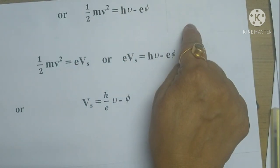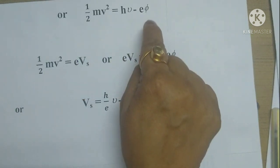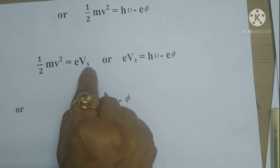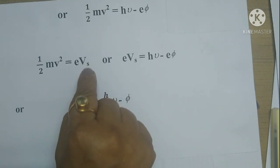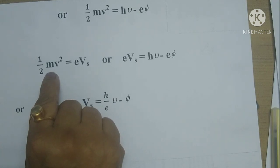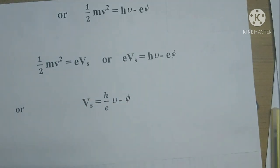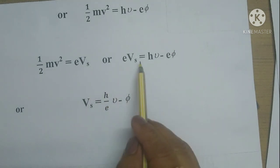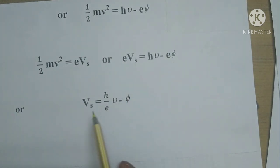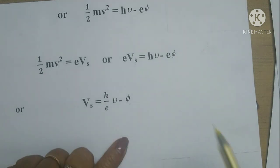We can write ½mv² = hν − eφ. If we apply a negative potential at the anode, it applies a repulsive force on the photoelectrons moving toward it. By increasing this negative potential, even the electrons with the highest kinetic energy will not be able to reach the anode. That particular potential is known as the stopping potential Vs, where eVs = ½mv²_max. At this point the current becomes zero. Substituting, we get eVs = hν − eφ, or Vs = (h/e)ν − φ.